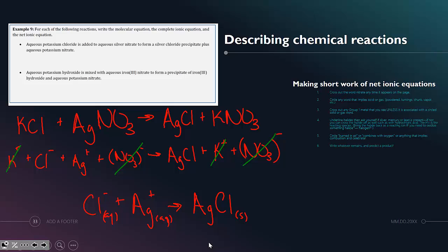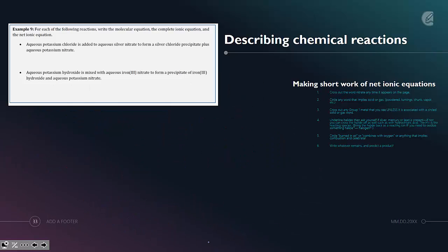Our next one says that potassium hydroxide is mixed with aqueous iron 3 nitrate. It forms iron hydroxide and potassium nitrate.